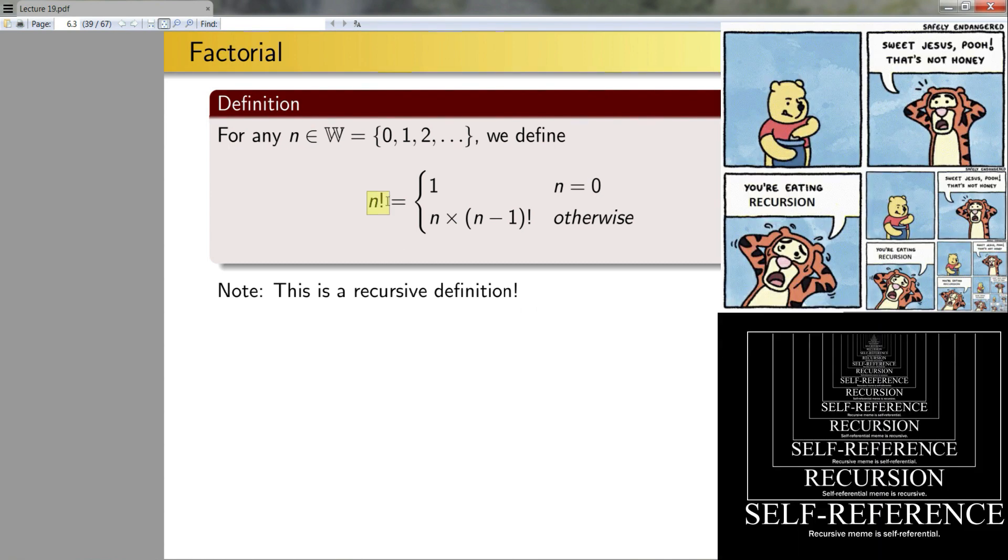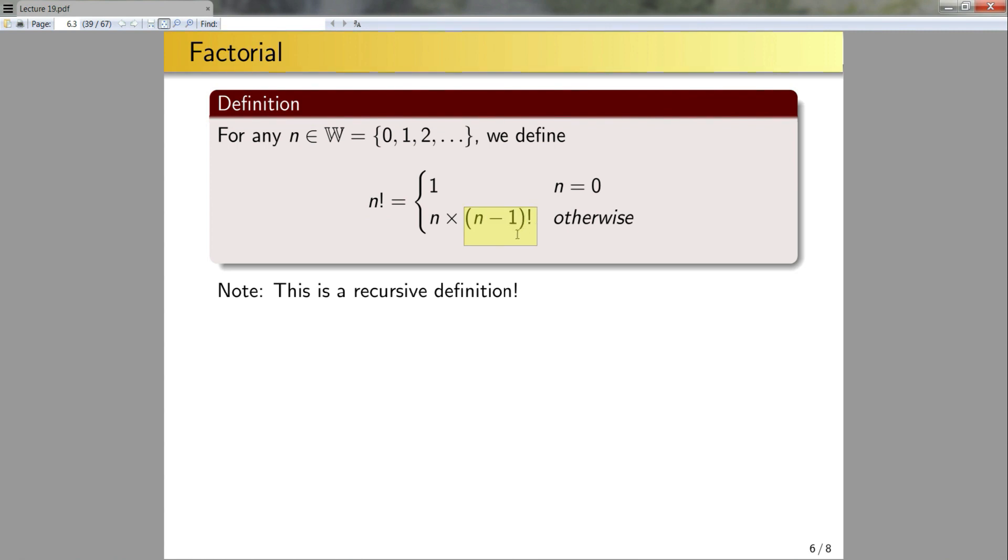n factorial, as part of the definition, calls n minus 1 factorial. If I were to try to code a program to evaluate this function as it's defined here, I would need to use recursion. Let's give an example of that. To compute 4 factorial, I write 4 factorial, well that's going to be 4 times 4 minus 1 factorial or 4 times 3 factorial. Now I don't know what 3 factorial is, so I plug that in. 3 factorial will be 3 times 2 factorial, just plugging it in here again. I don't know what 2 factorial is.